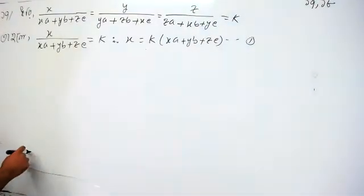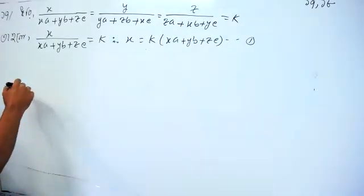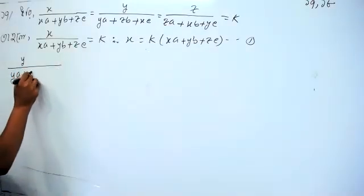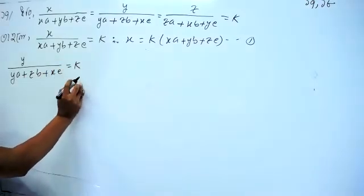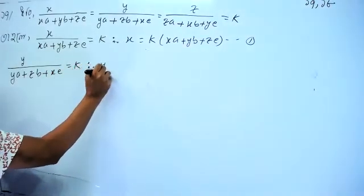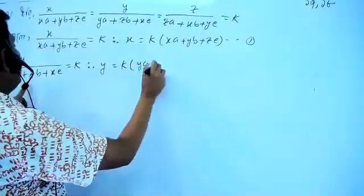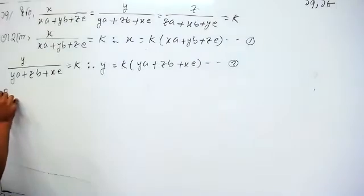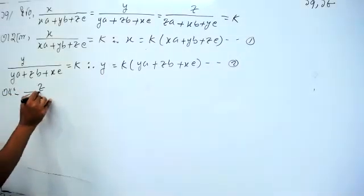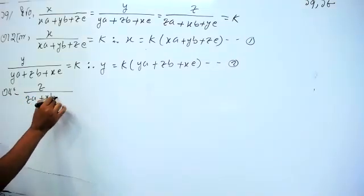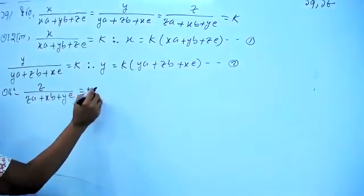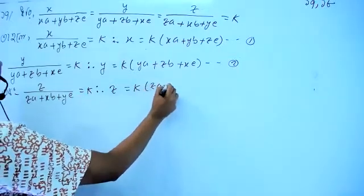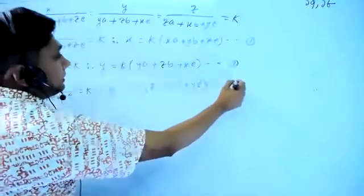Let's make two and three examples. y by y a plus z b plus x c minus k. Next, y x: k into y a plus z b plus x c. This is equation 2. Next, z by z a plus x b plus y c. This is equation 3.